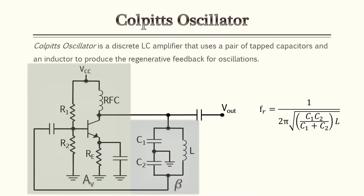Next is the Colpitts oscillator, which mimics the Hartley oscillator but in a different way. It is still an LC circuit; however, it uses a pair of tapped capacitors and an inductor to produce oscillation. On the left we have a BJT amplifier, and in the beta network we have two capacitors and an inductor. You can use the given equation to find the resonant frequency.